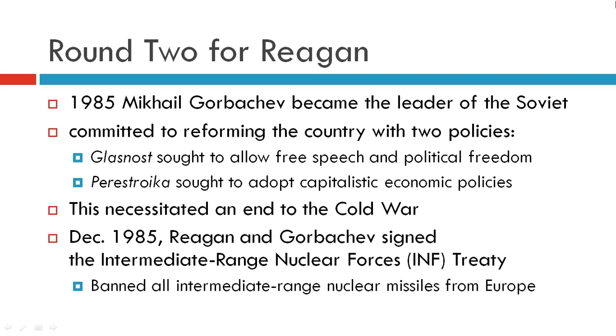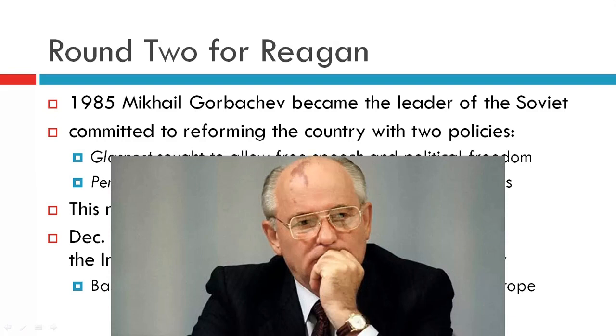In December of 1985, Reagan and Gorbachev signed the Intermediate-Range Nuclear Forces Treaty, the INF, which banned all intermediate-range nuclear missiles from Europe.